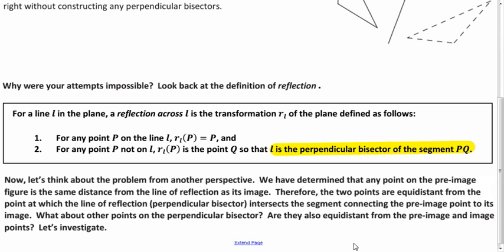But what about points that aren't on that segment? What about points that are on the perpendicular bisector, but not necessarily on the segment that connects the two corresponding points? Let's see what happens.